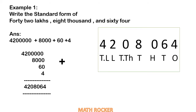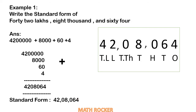Now we have to write the place value: ones, tens, hundreds, thousand, ten thousand, lakhs, ten lakhs. We divide into three groups — lakhs group, thousands group, and hundreds-tens-ones group. We put a comma in between the thousands group and hundreds-tens-ones group, then another comma in between the lakhs group and the thousands group. Now we have the answer.